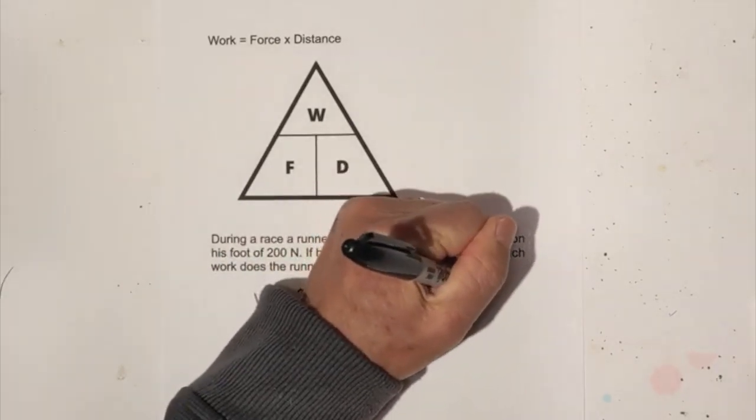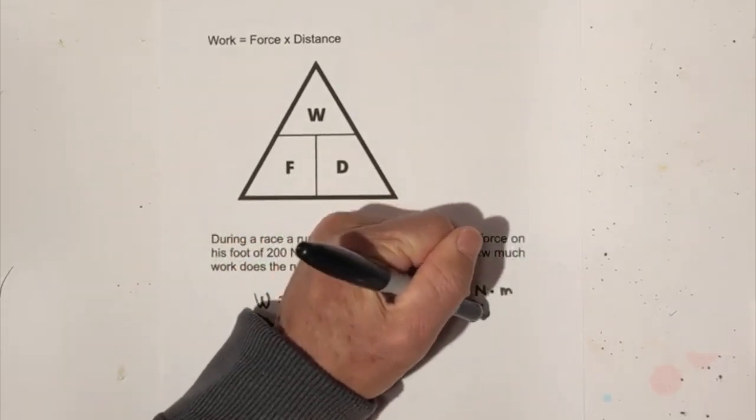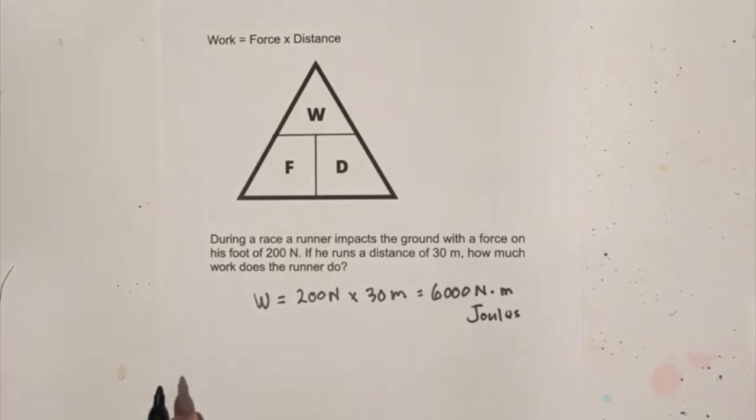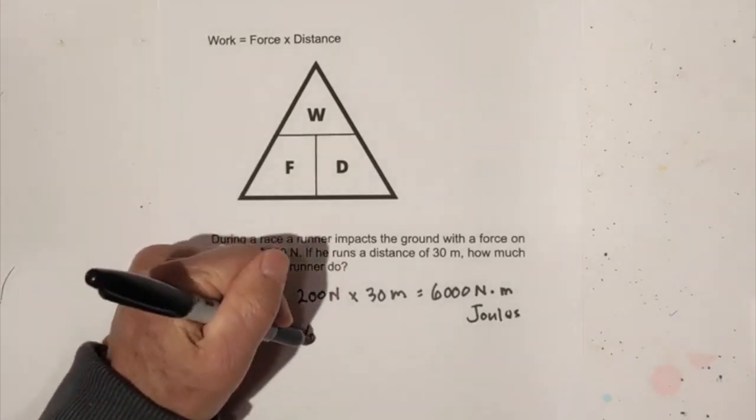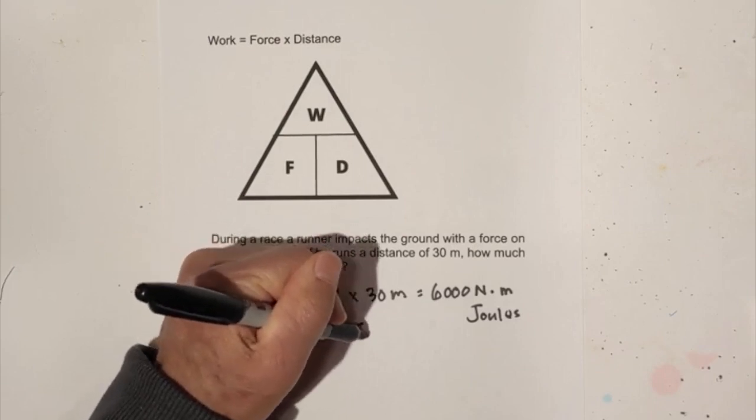It is newtons times meters and another way you can write that is joules. The SI unit for work is joules. So it is 6000 joules.